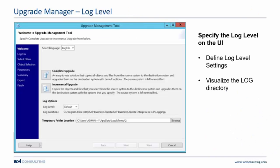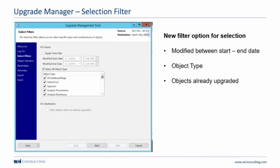Here's the defining screen where you can specify your log level on the user interface. You can choose your default between low, medium, and high. You also have the log location and your temp folder location. Here's the next screen where you can filter by a modified start and end date, the object types, and you can hide objects that have already been upgraded so you don't bring those through.